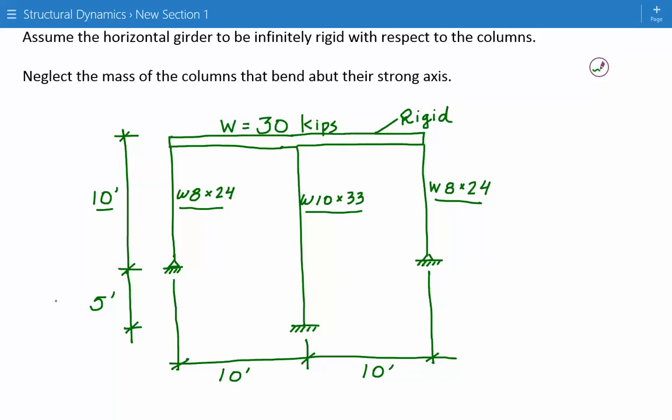And in the outer columns, the W8 by 24, they're pinned. Pinned boundary condition. And the W10 by 33 is a fixed boundary condition.